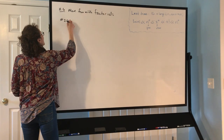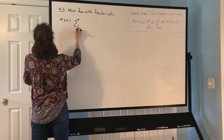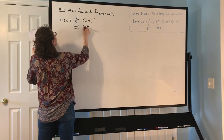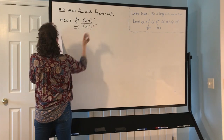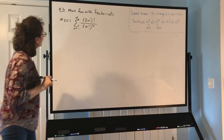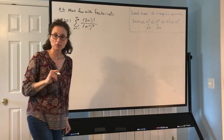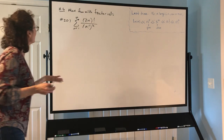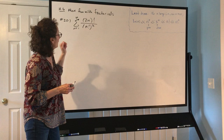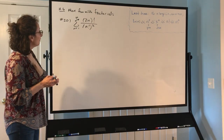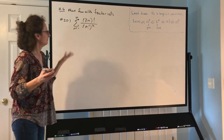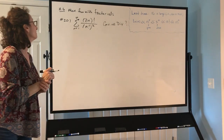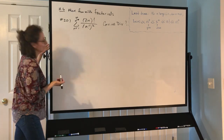Let's do one more factorial problem: 11.6 number 20. It says the sum from n=1 to infinity of (2n)! — parentheses matter — divided by (n!)². The ratio test is screaming here: there's not even an nth power for the root test. Lots of factorials. Take a guess: who grows faster, (2n)! or (n!)²? It's hard to say, so let's explore with the ratio test.